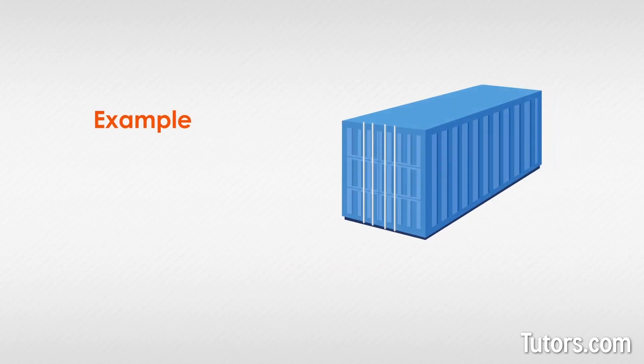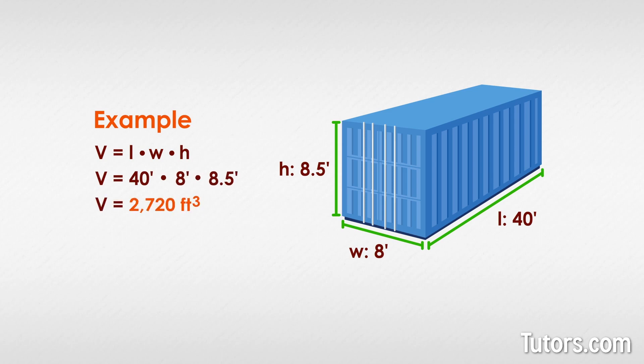Let's try an example. Here is a shipping container. The outside dimensions are eight feet wide, eight and a half feet high, and forty feet long. What is the volume of the container? We plug in our numbers into our volume formula, and we find that the volume of our shipping container is 2,726 cubic feet.